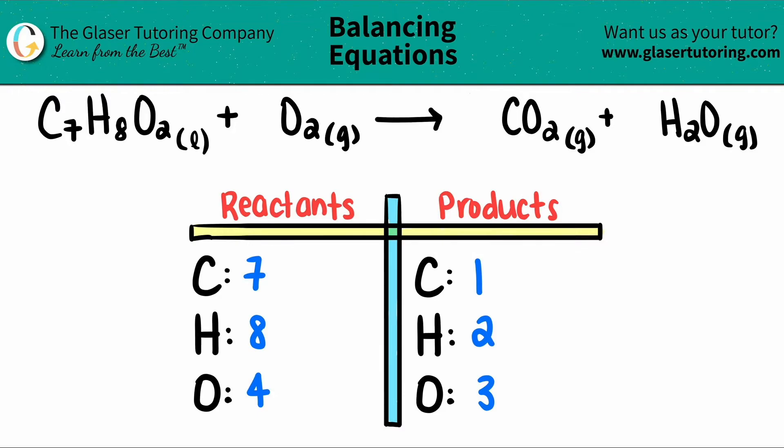Always start balancing with the one that looks easy to you by multiplication. Let's start with the carbon. You always want to take your lower number and get it to the higher number by multiplying. So one times what will get me to seven? One times seven. And whatever number that you stated is the coefficient that goes in front of the element that you're trying to balance. So in this case, I'm going to put a seven in front of the CO2s.